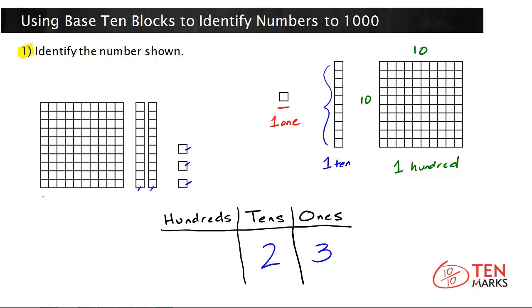And lastly, I see one hundreds flat, which means this number has 100. Taking this all together, the number shown in the model is 123. It has 100, two tens, and three ones.